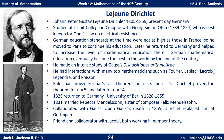He made an intense study of Gauss's arithmetic book, published right at the beginning of the century, and had interactions with many top mathematicians such as Fourier, Laplace, Lacroix, Legendre, and Poisson. He also did some work in number theory: Euler had proved Fermat's last theorem for n=3 and n=4, and Dirichlet proved the theorem for n=5 and later for n=14.